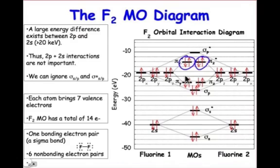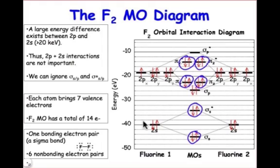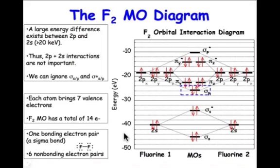Take a look at all of those combinations that have filled bonding and filled antibonding. You can see that there are exactly 6 non-bonding pairs of electrons that correspond to the 6 lone pairs that we draw on the Lewis dot structure. The only pair of electrons that didn't have a counterpart in an antibonding orbital would be the one shown in the dashed line — the sigma_p — and that's the orbital that contributes to the bond between the two fluorine atoms.